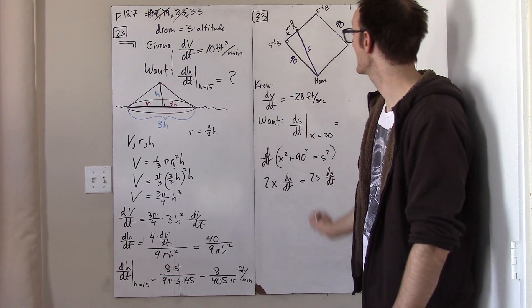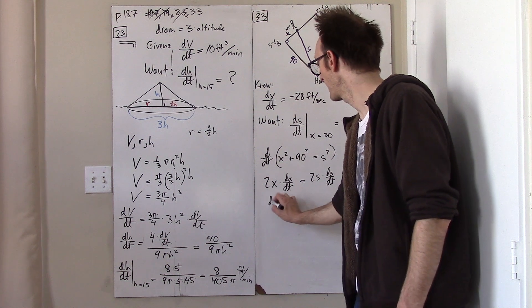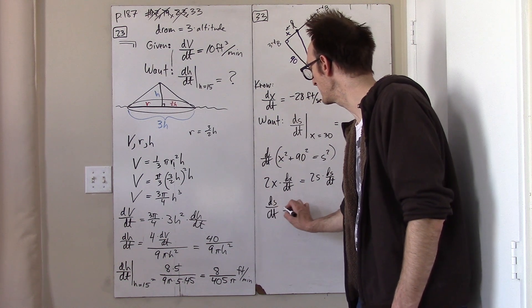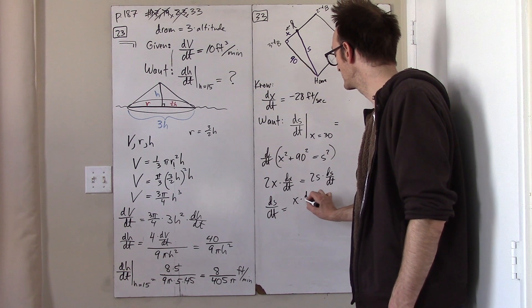The twos cancel. And thus, ds dt is just x dx dt over s.